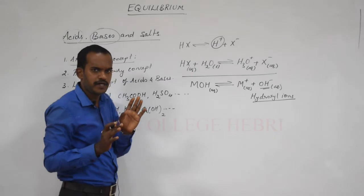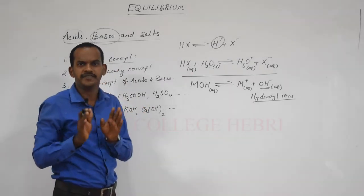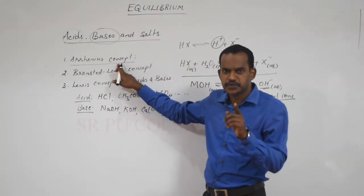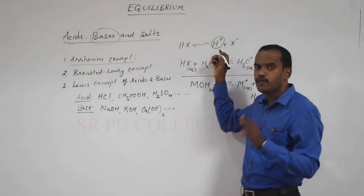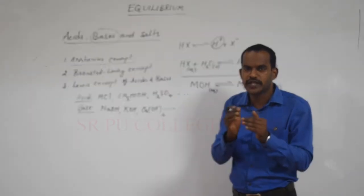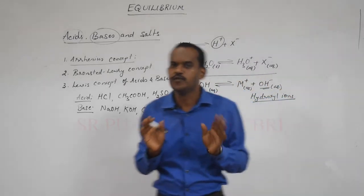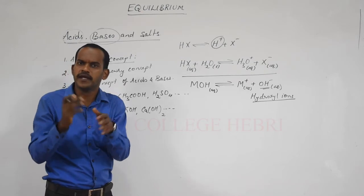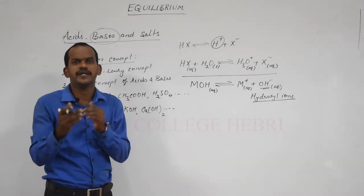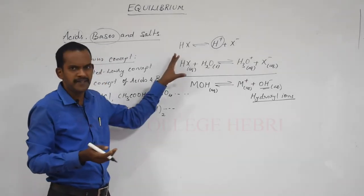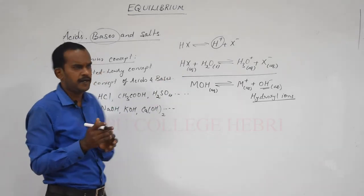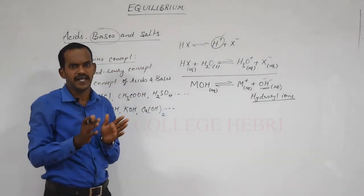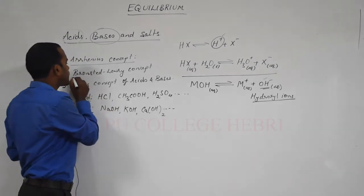To summarize: Arrhenius acid is a substance which dissociates to give H+ ions when dissolved in water. Base is a substance which dissociates to give OH− ions when dissolved in water. This theory has limitations — it is applicable only in aqueous media, not in other media. Also, there may be some acids which do not have hydrogen yet still show acidic properties. The first concept, Arrhenius, is based on H+ and OH− ions deciding whether a substance is an acid or a base.